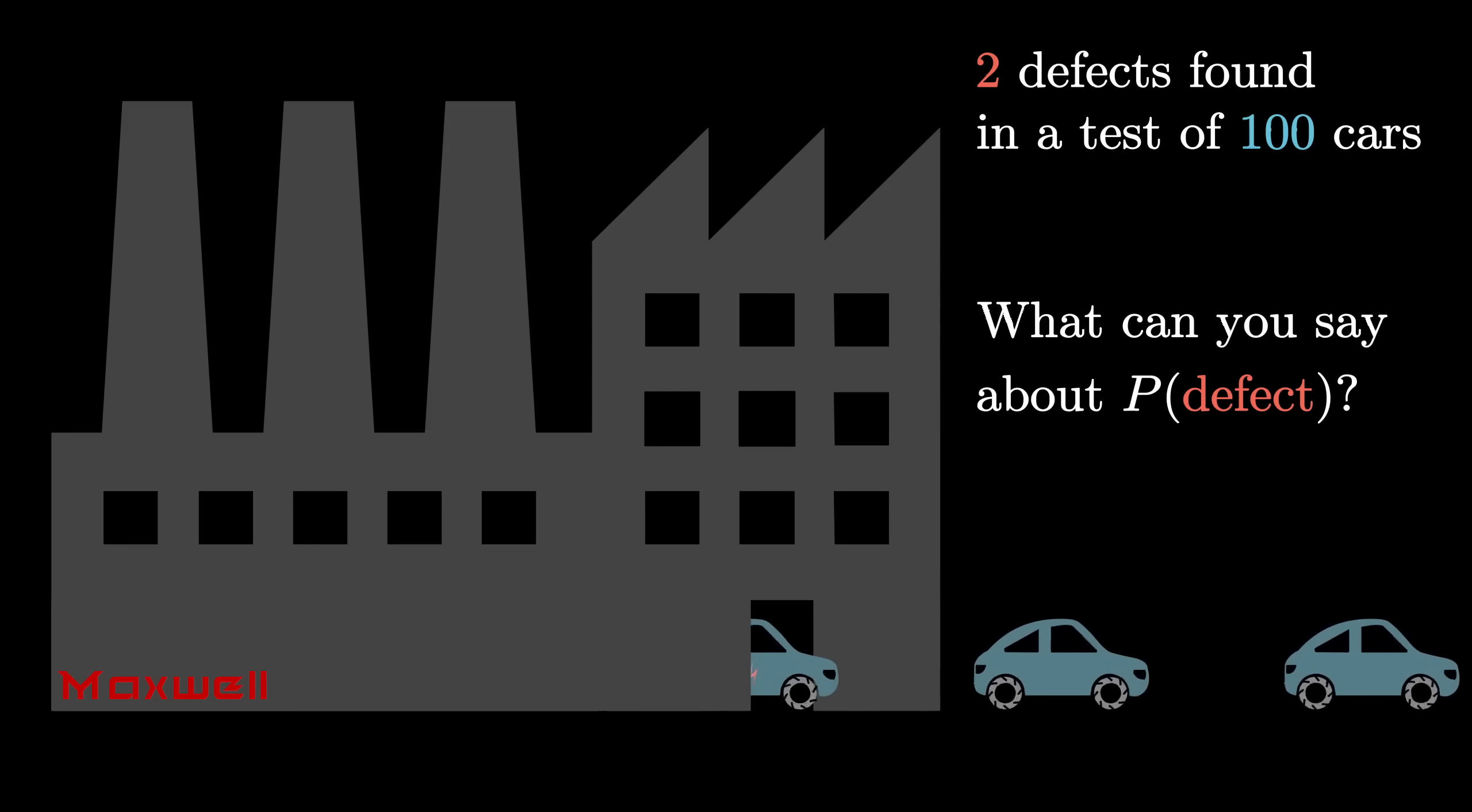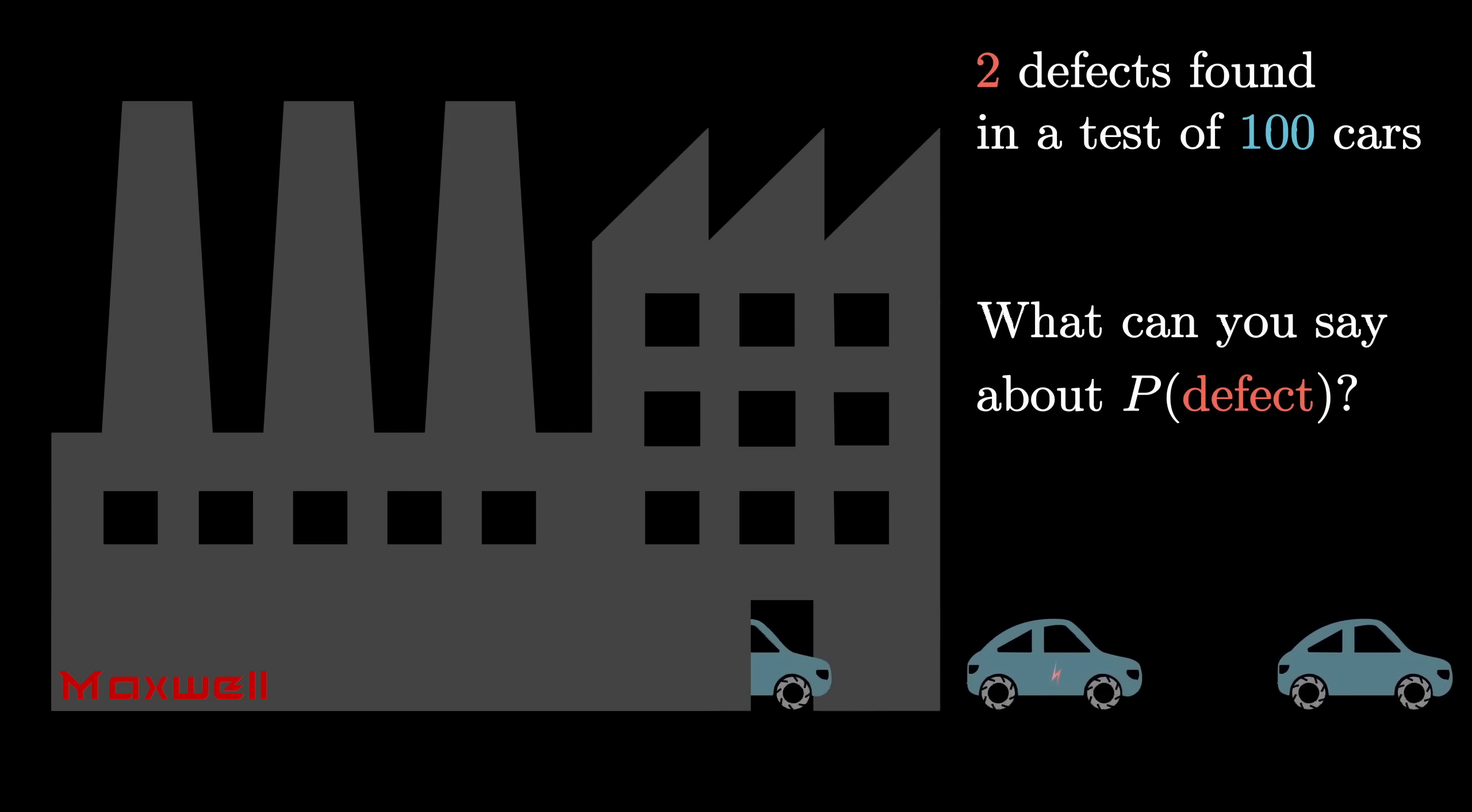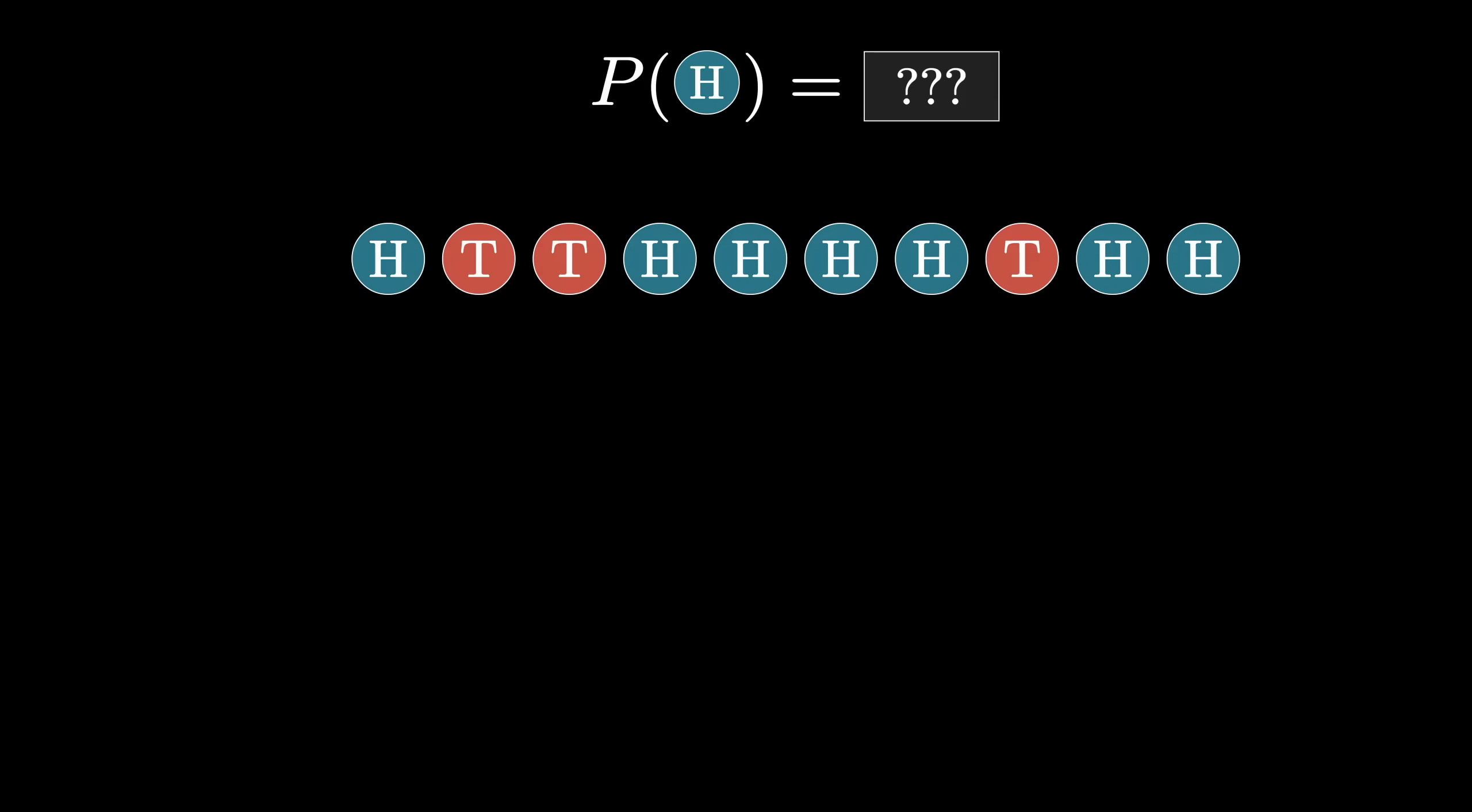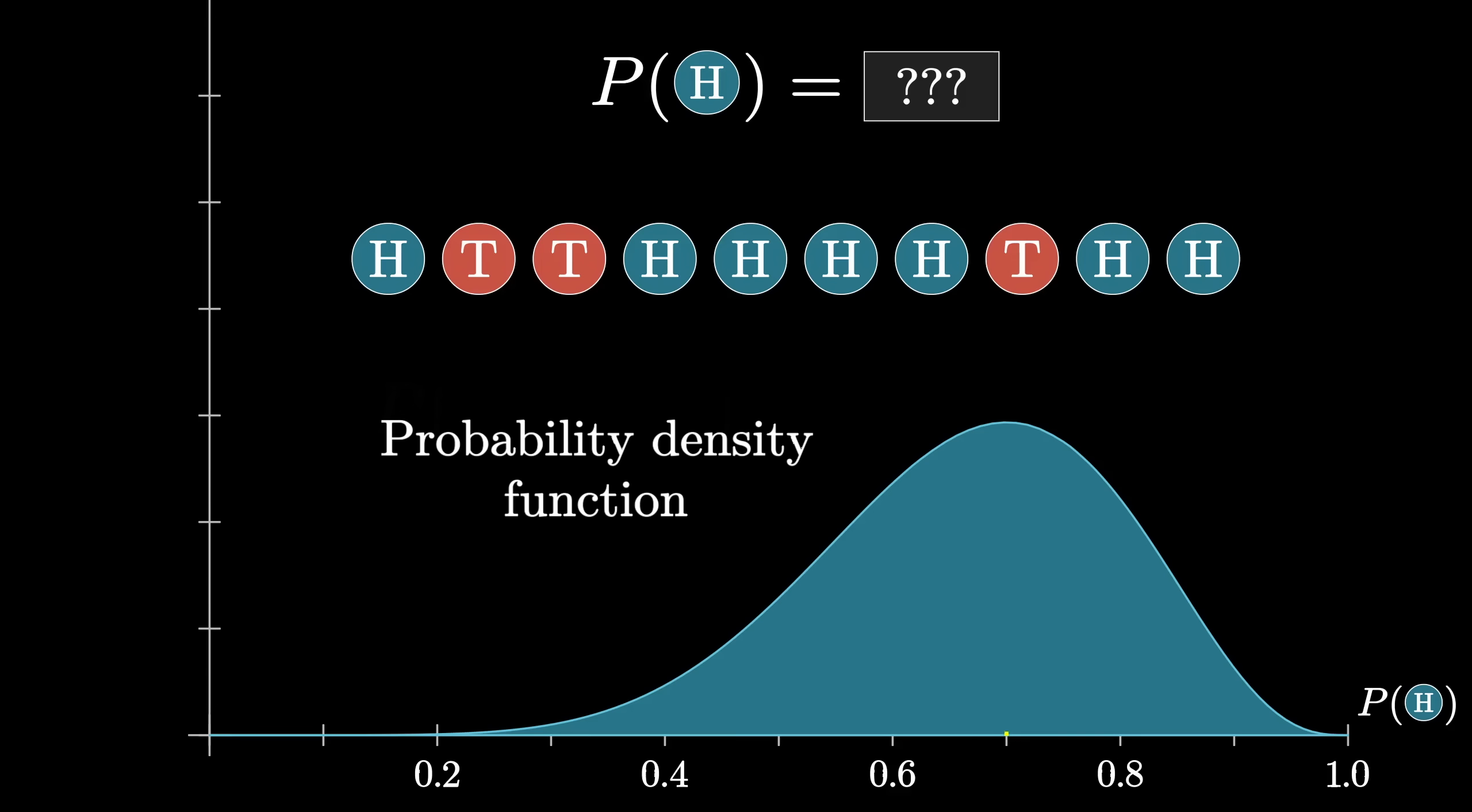But anyway, steering away from the theory somewhere back in the loose direction of application, look back to our original question about the coin with an unknown weight. What we've learned here is that the right question to ask is, what's the probability density function that describes this value h after seeing the outcomes of a few tosses? If you can find that PDF, you can use it to answer questions like, what's the probability that the true probability of flipping heads falls between 0.6 and 0.8? To find that PDF, join me in the next part.